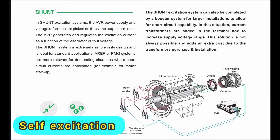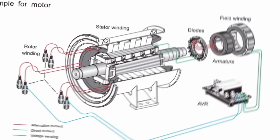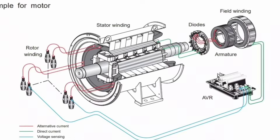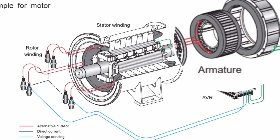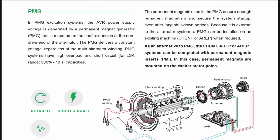The first type is the self-excitation system. In this system, the alternator takes its own voltage from the main stator winding as a sensing supply. The AVR, automatic voltage regulator, converts this AC voltage into DC and sends it to the rotor winding through rectifiers. But this system has one big drawback: it depends on residual magnetism to generate the initial voltage. If the alternator stays off for a long time or if there's zero residual magnetism, the alternator will not start generating power.